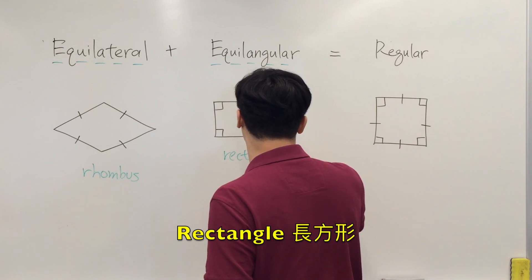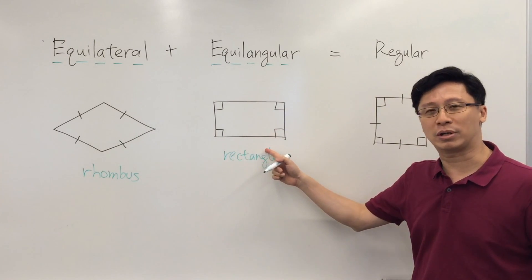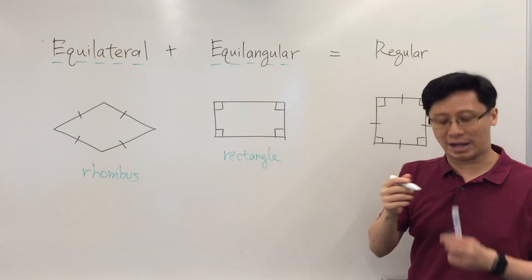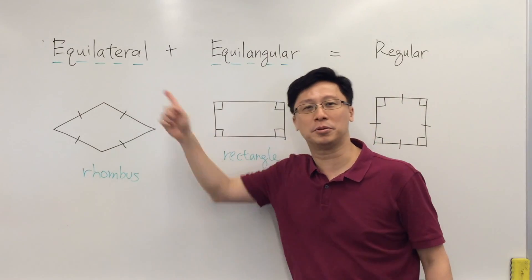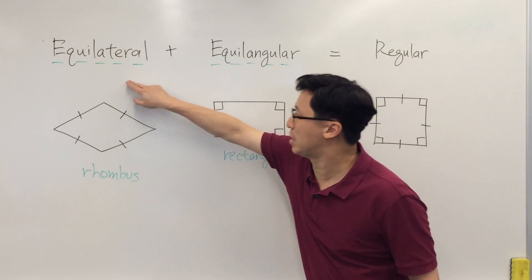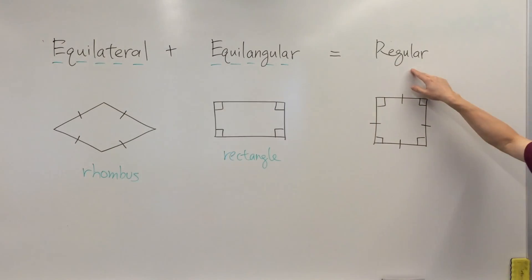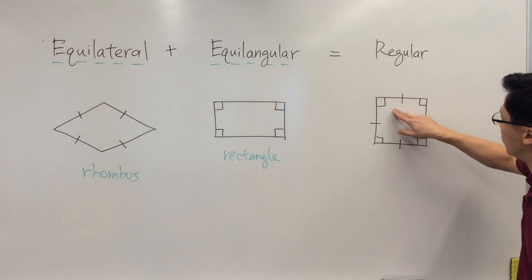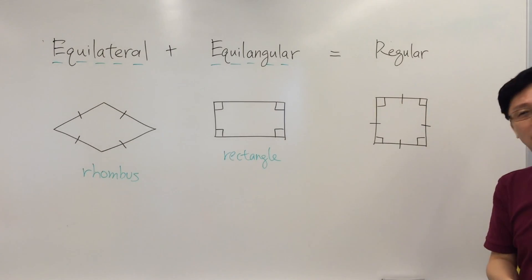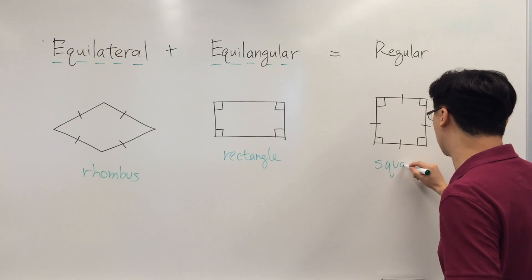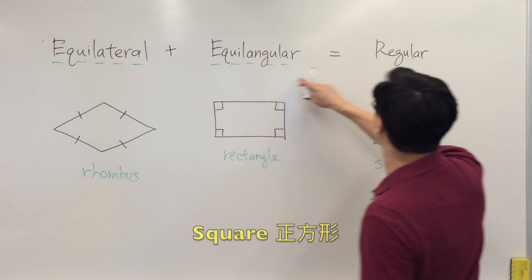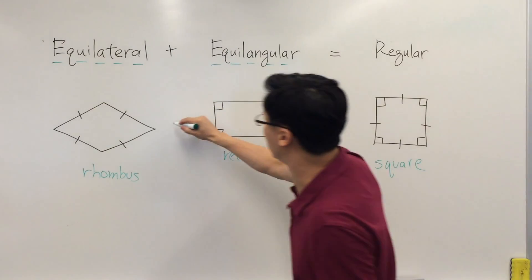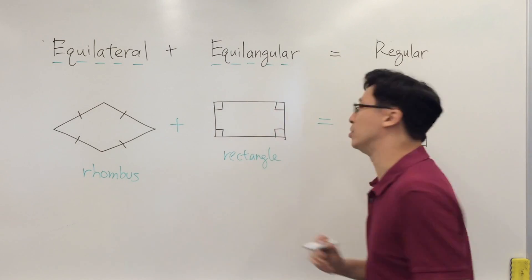And finally, if we combine these two properties - equal sides, equal angles - this will become a regular polygon, or regular quadrilateral. Four equal sides, four equal angles. And actually we call this a square. A square. So equilateral plus equilangular, we have a regular polygon. We have an equation like this.